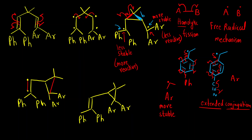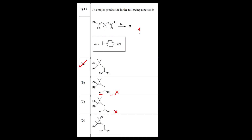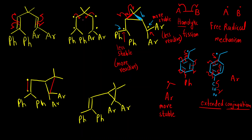So the final product is a three-membered ring with two Ar groups, two methyl groups, and a double bond across which there are two phenyl groups. Looking at the answer options: three-membered ring with two Ar groups — options with one Ar one Ph, or two Ph groups are incorrect. The correct answer is option A, and this question was only for one mark.